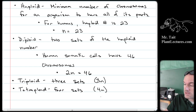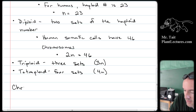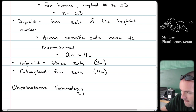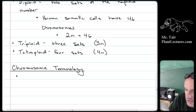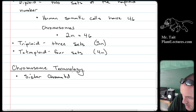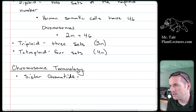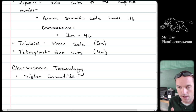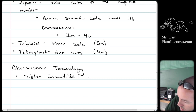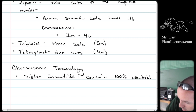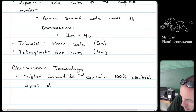Next, let's talk about chromosome terminology, because this confuses a lot of people. We need to distinguish between sister chromatids and homologous chromosomes. Sister chromatids contain 100% identical copies of DNA — they are exact copies. There are two sister chromatids per chromosome during mitosis.